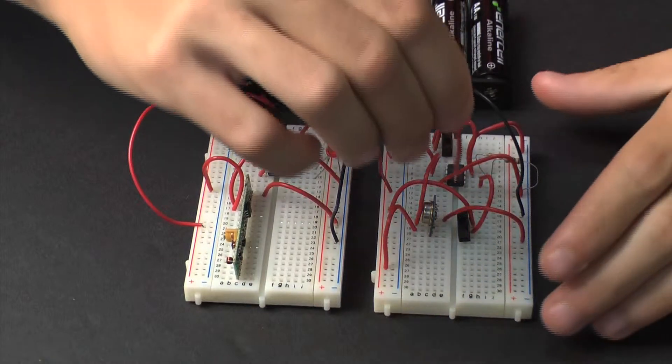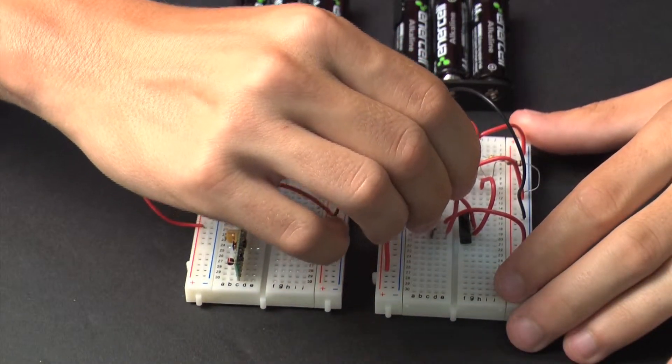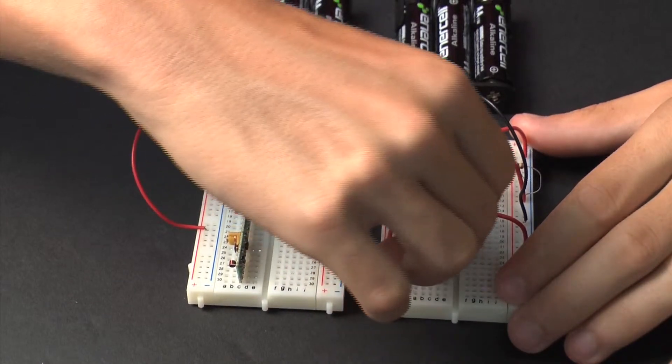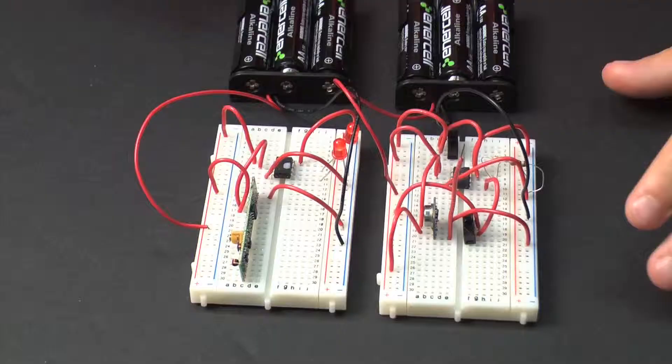Next, attach an antenna to the transmitter breadboard. You can also attach an antenna to the receiver breadboard by inserting the wire into the appropriate pin.